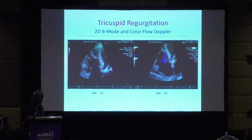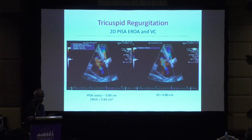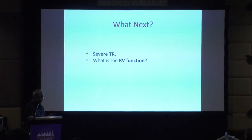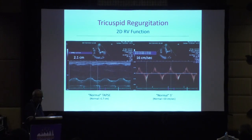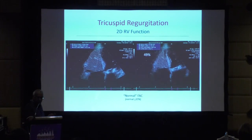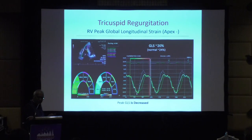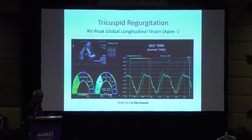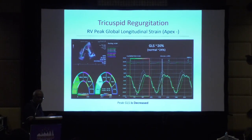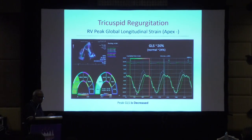Case three: mildly dilated RV with severe TR confirmed by PISA and vena contracta. TAPSE 2.1 cm (normal), S' 16 cm/s (normal), FAC 49% — appropriate for degree of TR. RV free wall strain by VVI is 20% in the setting of FAC of 49% — a clearly decompensated ventricle. We need to intervene at this point if we want to impact RV function. RV strain is not standard practice, which is unfortunate because it may be the best way to judge RV performance in volume overload.